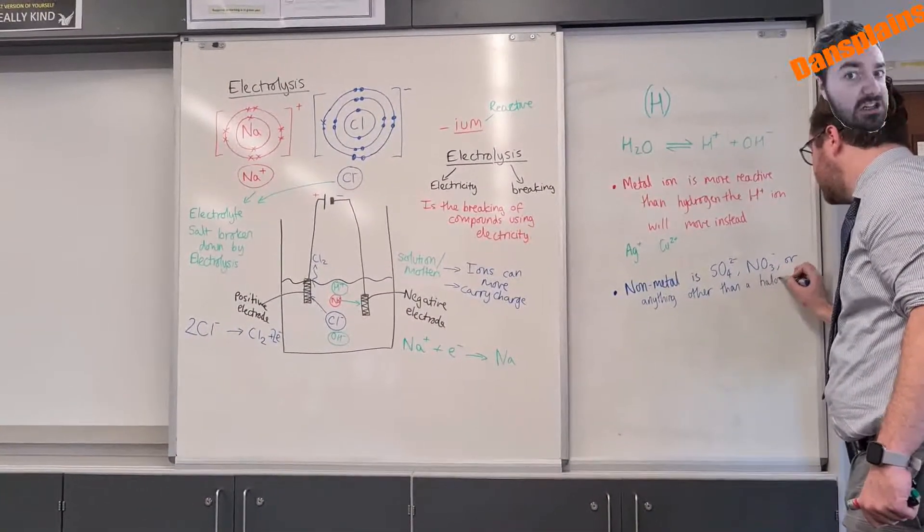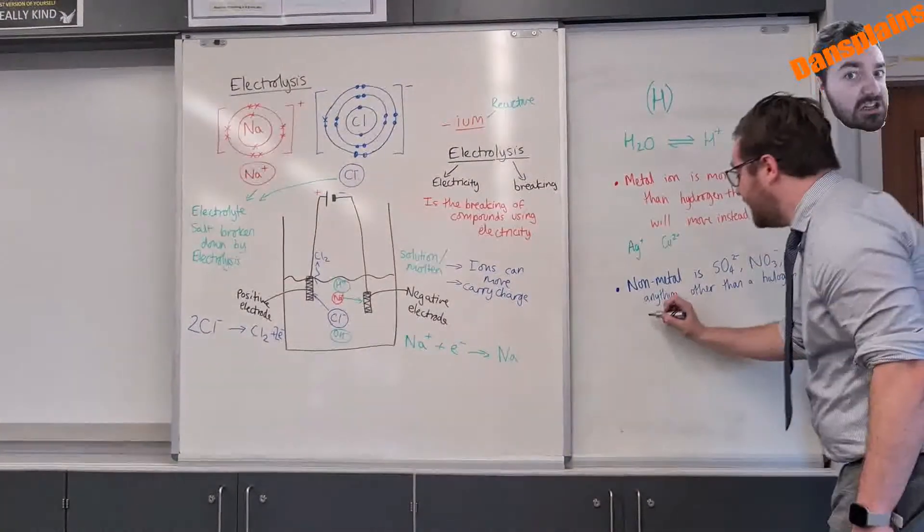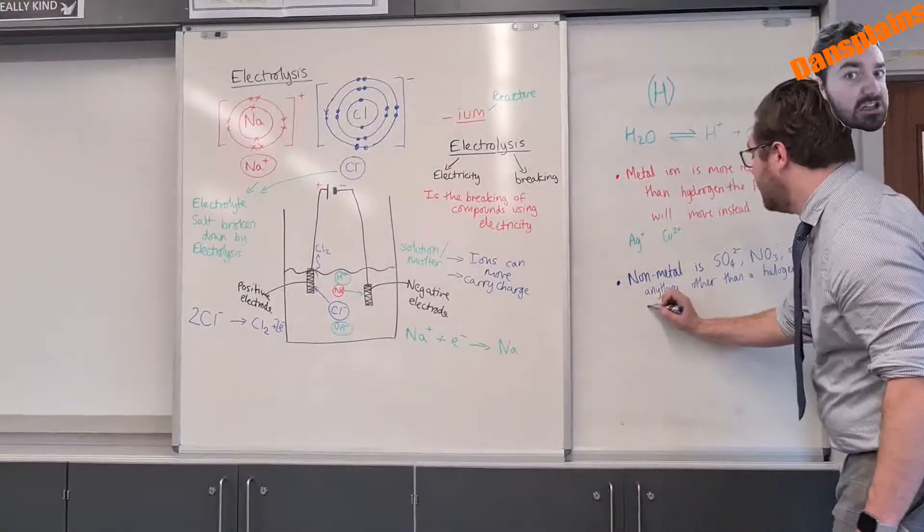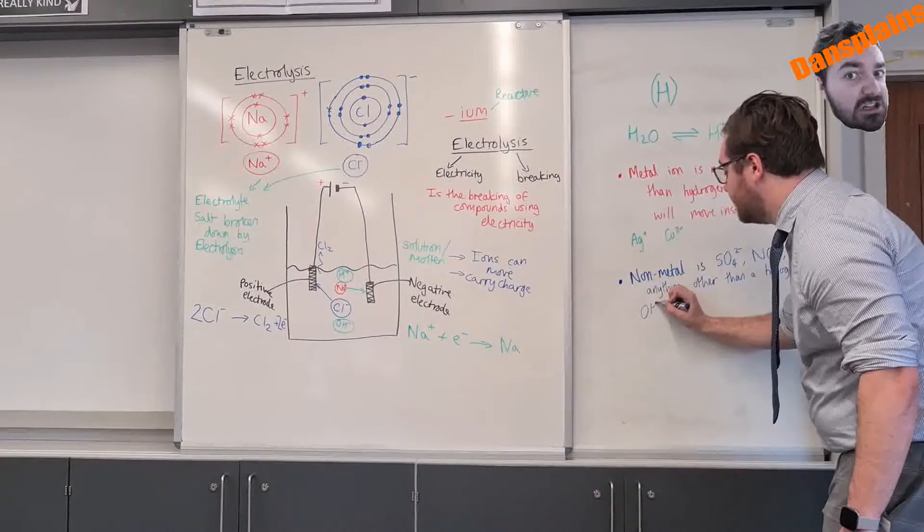halogen - so group seven - we would have the OH moving instead.